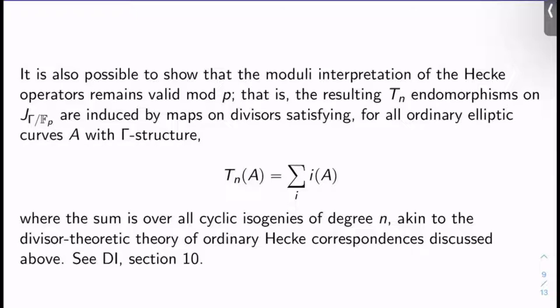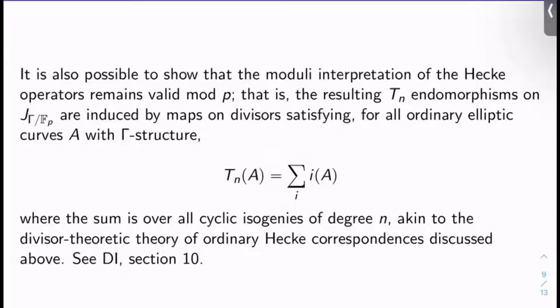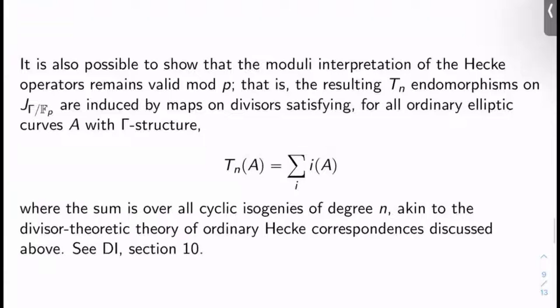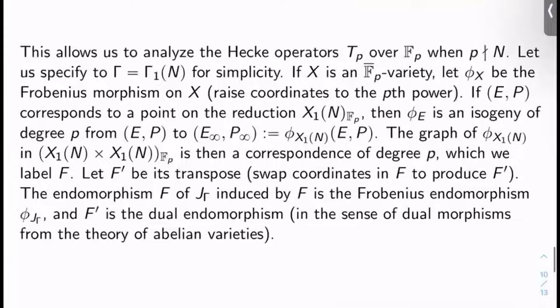This is exactly the divisor-theoretic theory of the ordinary Hecke correspondences already discussed in previous videos. Hecke correspondences were given by sums of images of elliptic curves under certain isogenies — I'm just replacing a prime p by an integer N, and I'm getting the exact same phenomenon happening here. Diamond-Shurman section 10 is a great place to look. Because the moduli interpretation of the Hecke correspondences remains valid mod p, I can analyze the Hecke operators T_p over 𝔽_p as long as p doesn't divide M. For the rest of the discussion, let me specify Γ = Γ₁(N) for simplicity.